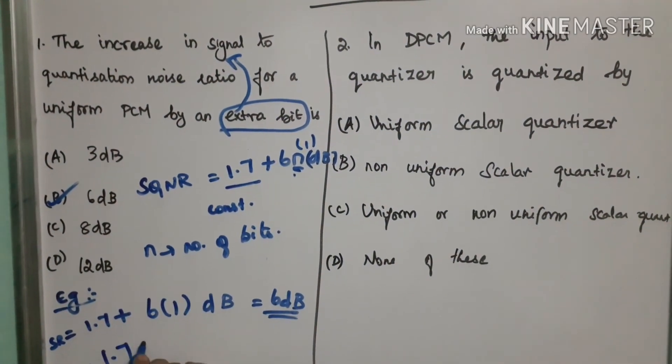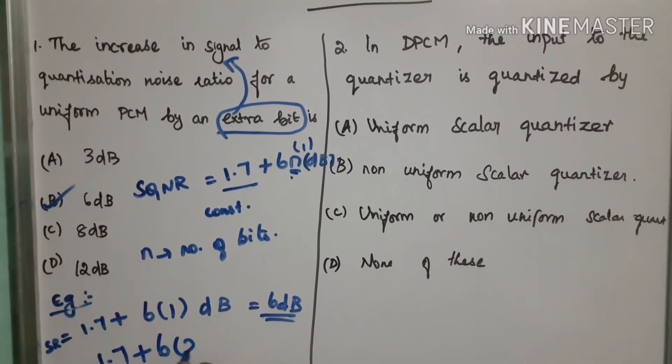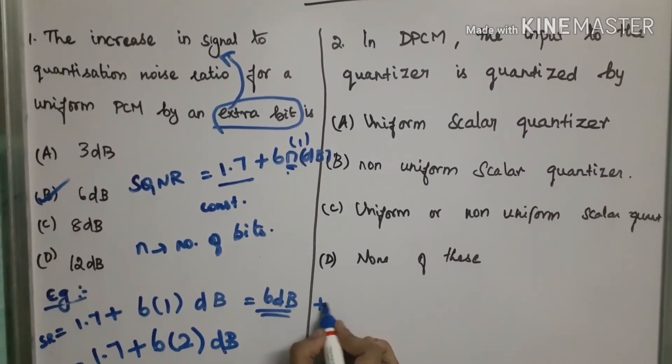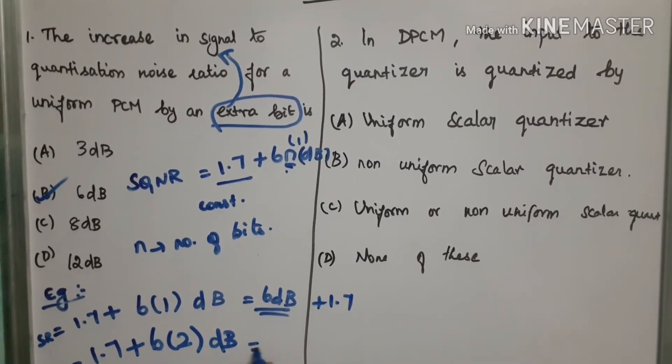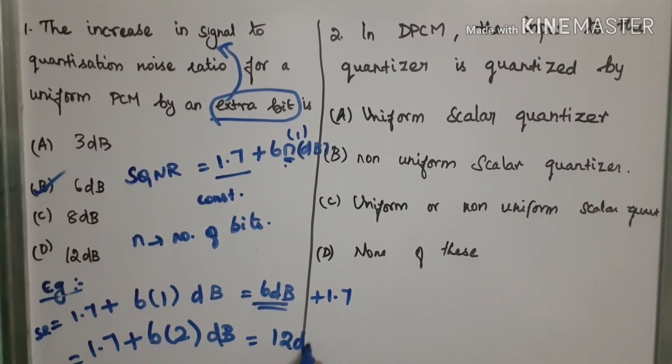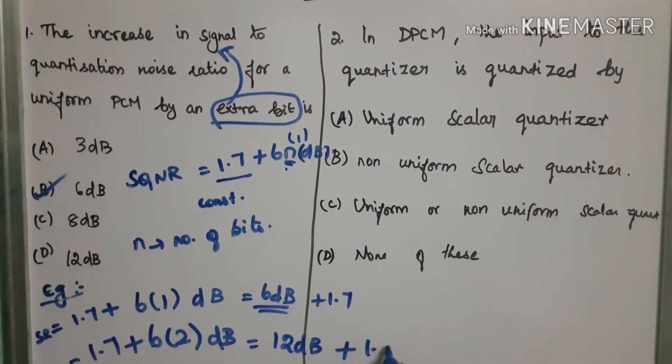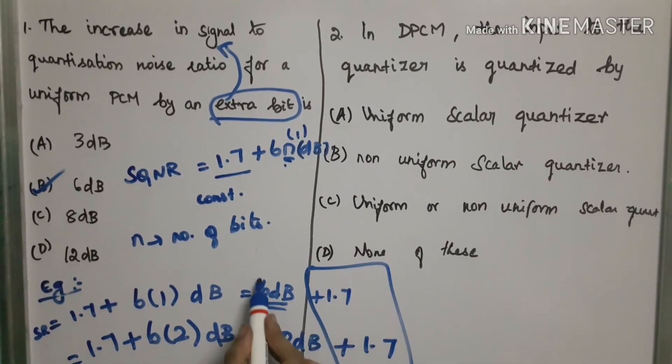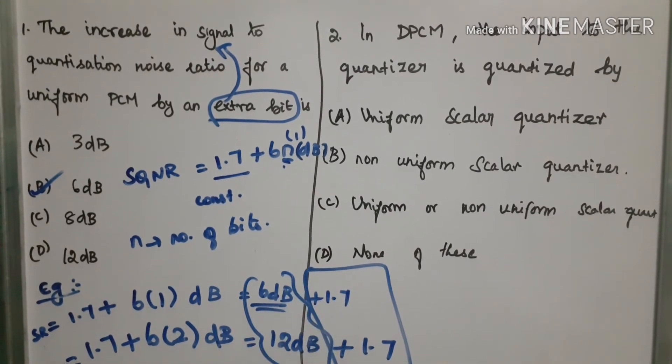Let us consider 1.7 plus 6 into 2 dB plus 1.7 here. Again here 12 dB plus 1.7. See here these two are constant terms. The difference between these two terms is 6 dB.